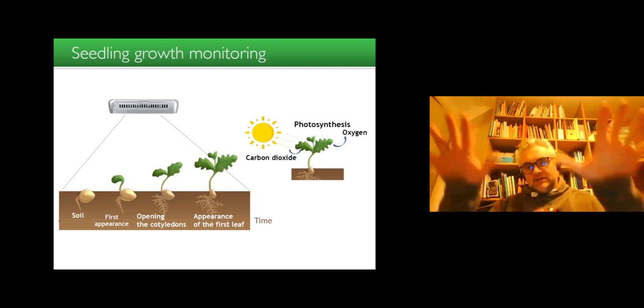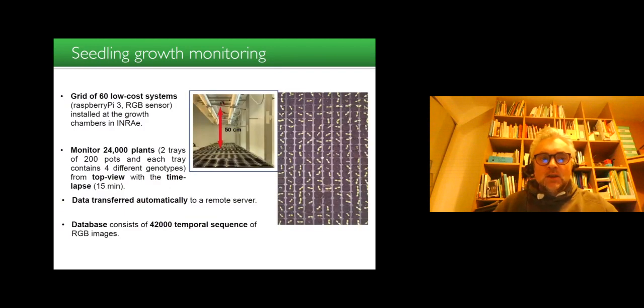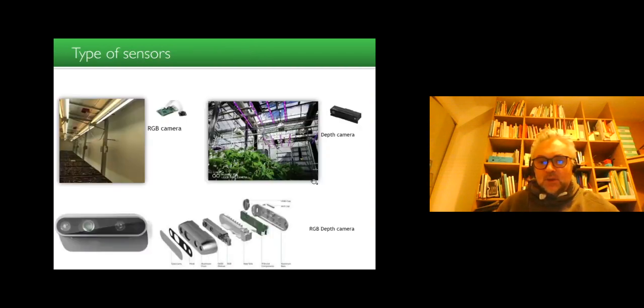So the plants learn how to capture energy from the light and from the soil. So we have developed a platform based on 60 low-cost systems, Raspberry Pi, with RGB sensors, monitoring 24,000 plants with images which are acquired at a frame rate of 1 every 15 minutes, with data which are automatically transferred to a remote server. And we produce such monitoring. We have tested actually variants of cameras. First generation was RGB cameras, but then we have also tested depth camera. And lately, that's the result I'm going to show, RGB depth camera combining both color and lidar-like data.